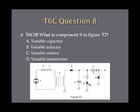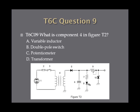Question 8: What is component 9 in figure T2? A. Variable capacitor. B. Variable inductor. C. Variable resistor. Or D. Variable transformer. Question 9: What is component 4 in figure T2? A. Variable inductor. B. Double pole switch. C. Potentiometer. Or D. Transformer.